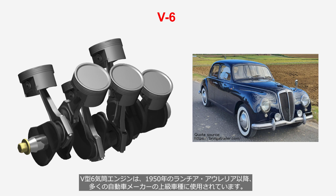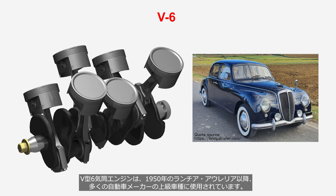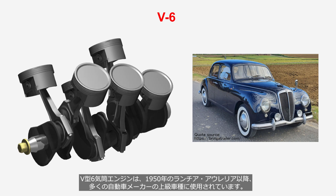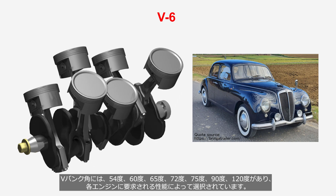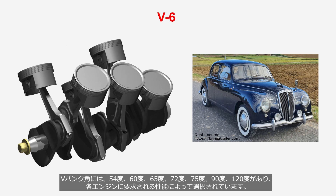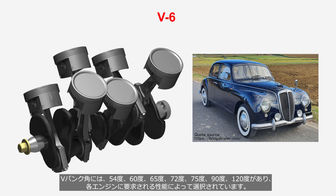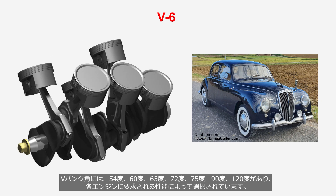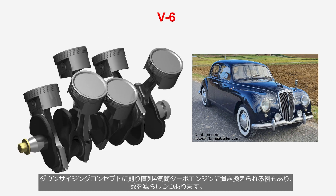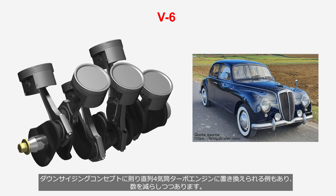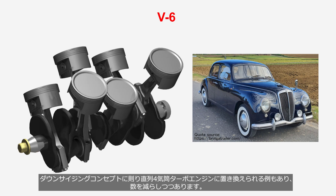Since the Lancia Aurelia was launched in 1950, the V6 engine has been widely used in the upper models of many car manufacturers. There are various V-bank angles, such as 54, 60, 65, 72, 75, 90, and 120 degrees, chosen based on the performance requirements of each engine. In accordance with the downsizing concept, some engines are being replaced by straight four turbo engines, leading to a reduction in their numbers.